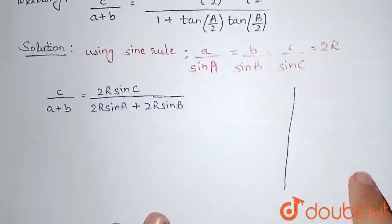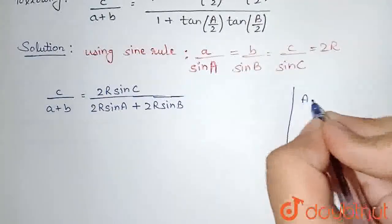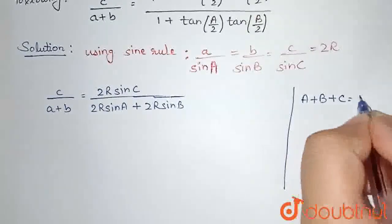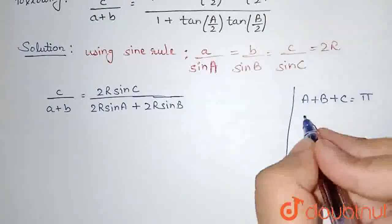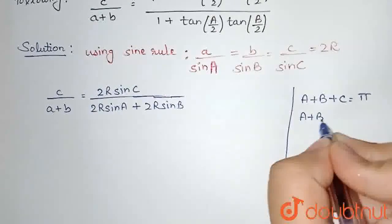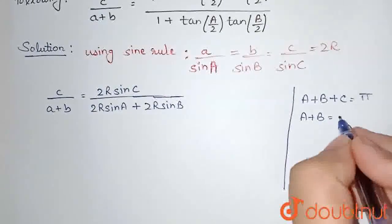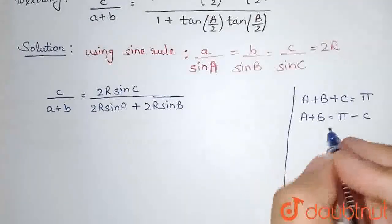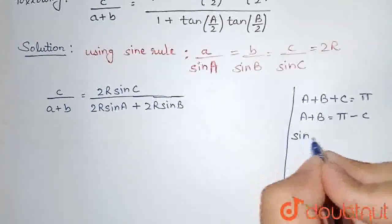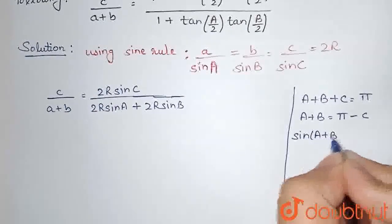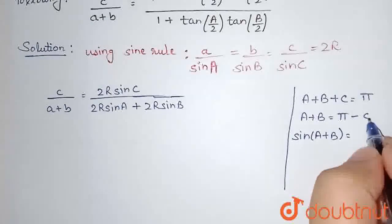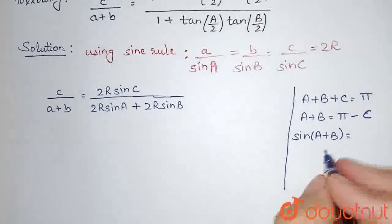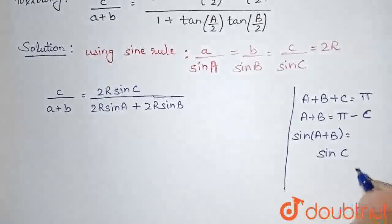We were told it is a triangle, so the sum of angles is π. I can write A + B = π − C. Taking sine of both sides, sine(π − θ) = sine θ only, so sine(A + B) = sine C.